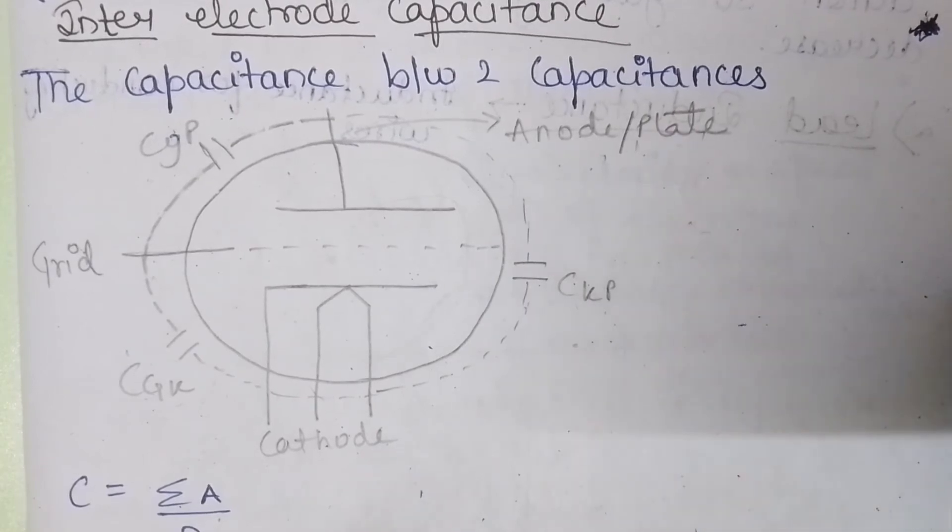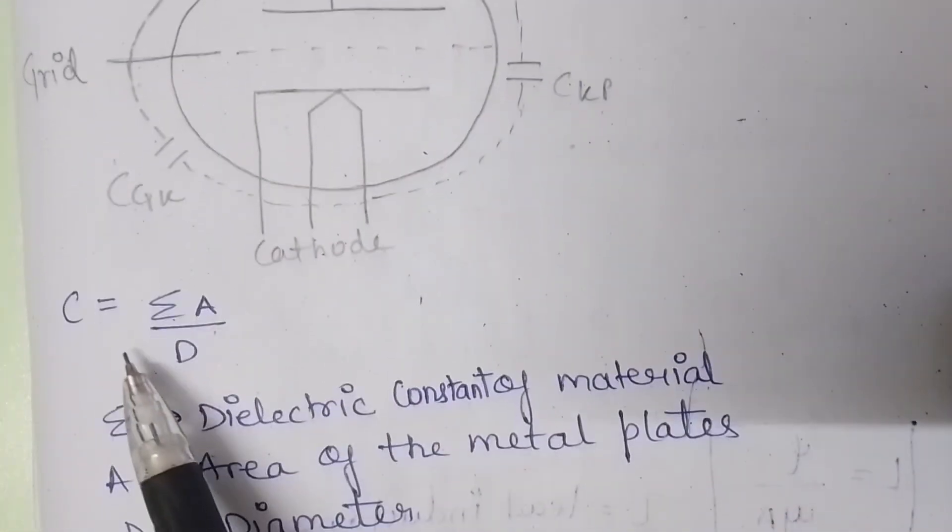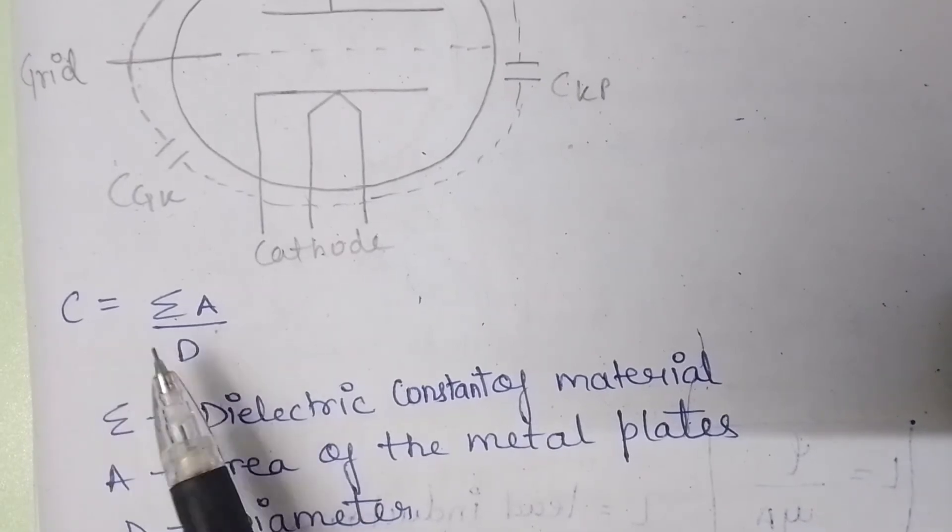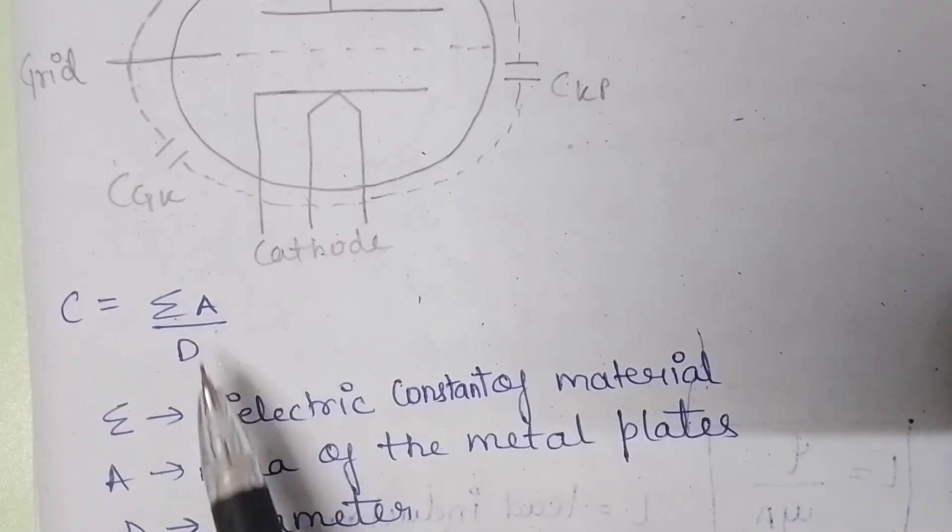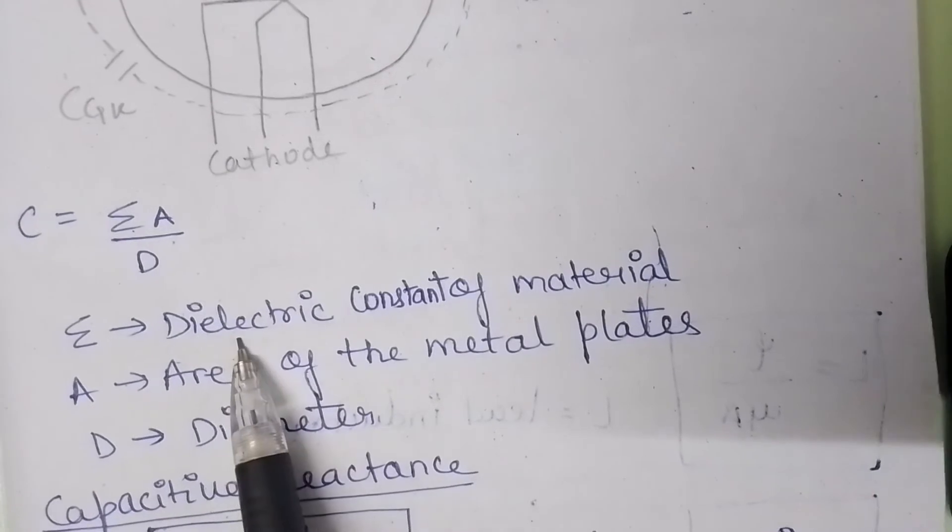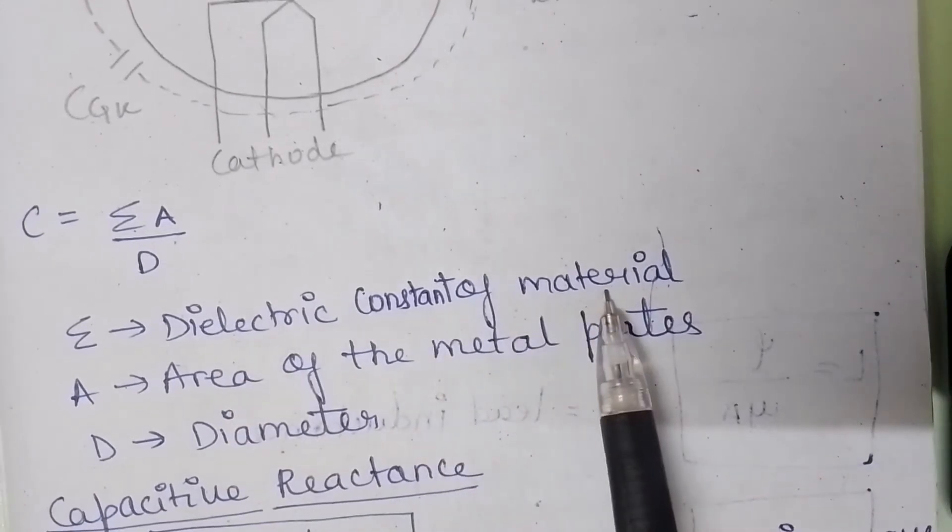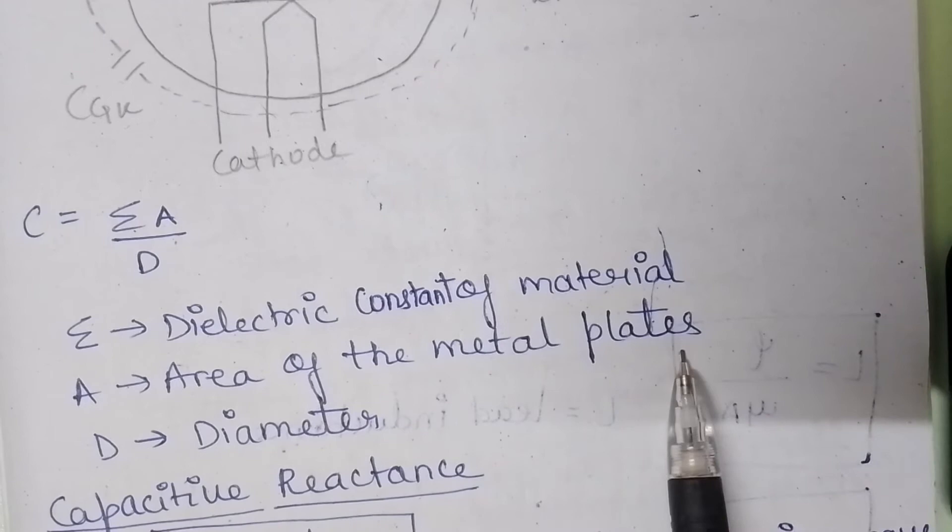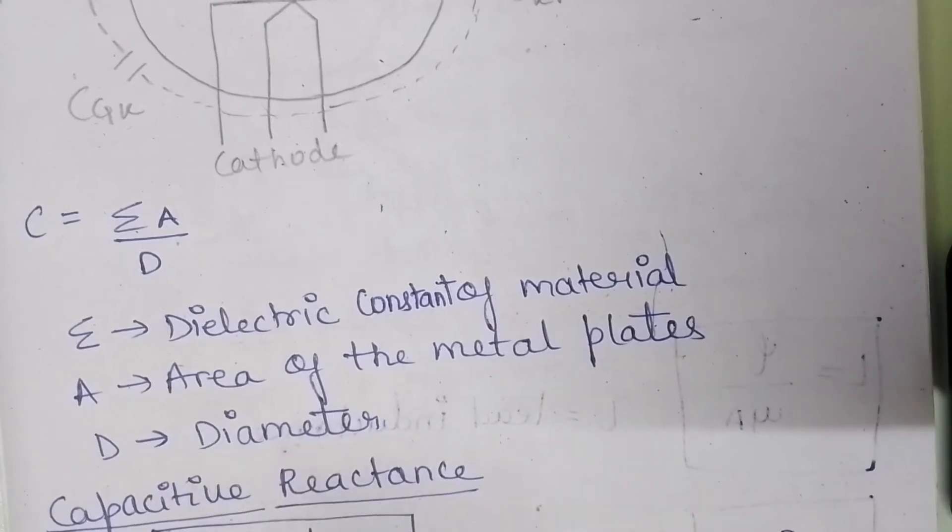And Ckp represents the capacitance between cathode and anode or the plate. Now here C is the inter-electrode capacitance which is equal to sigma A upon D, where sigma is the dielectric constant of the material, A is the area of metal plates and D is the diameter.